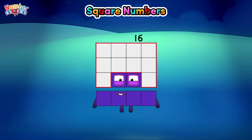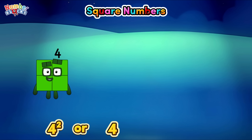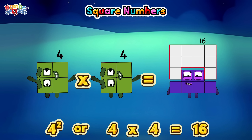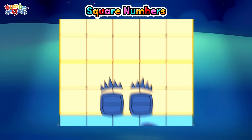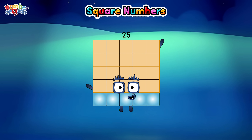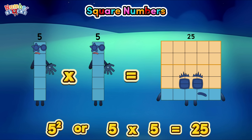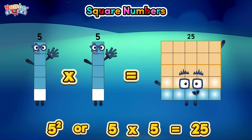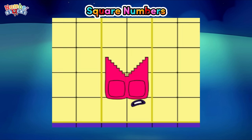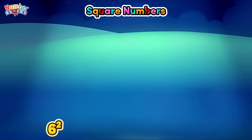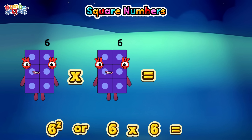Sixteen. Four square, or four times four, is equals to sixteen. Twenty-five. Five square, or five times five, is equals to twenty-five. Thirty-six. Six square, or six times six, is equals to thirty-six.